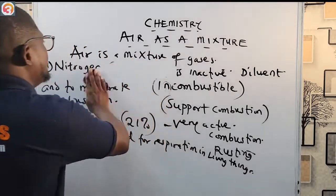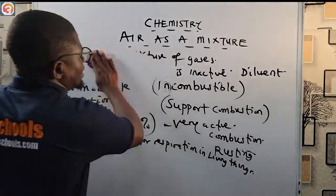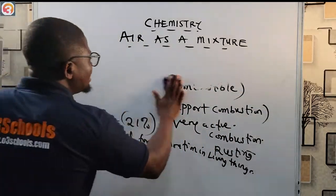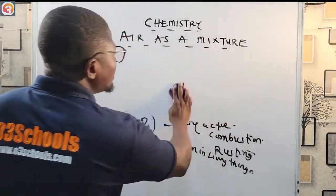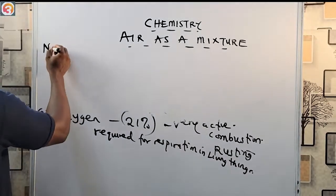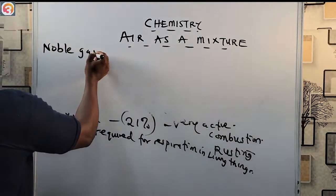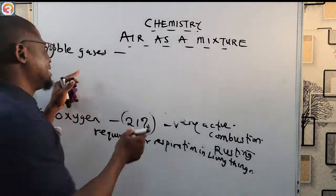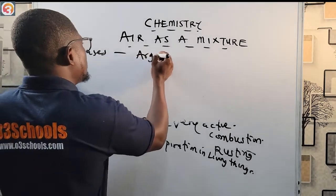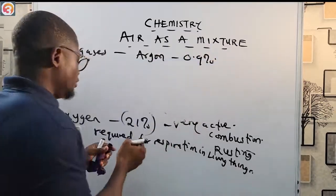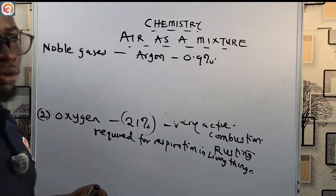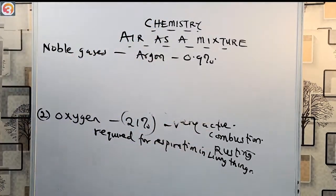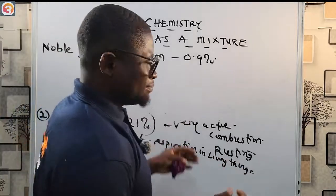Now let us look at noble gases. Among the noble gases, the most abundant noble gas in the atmosphere is argon. Argon contains about 0.9% of the total atmospheric air composition. It is the most abundant noble gas, and argon has many uses.